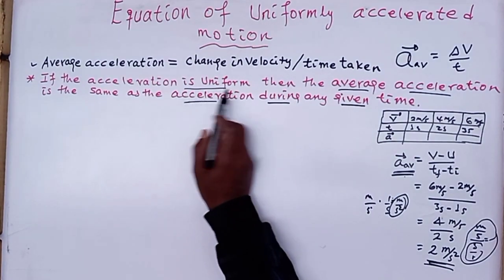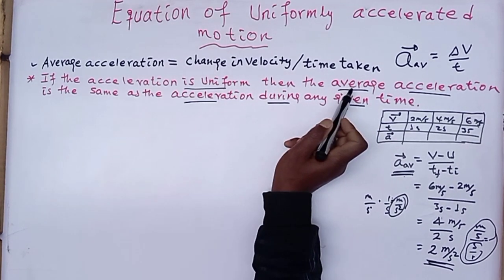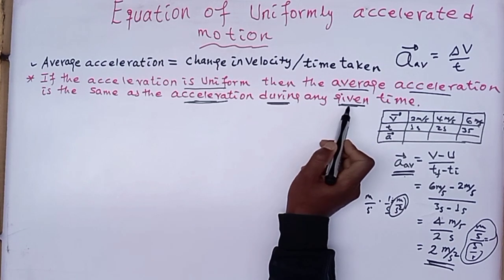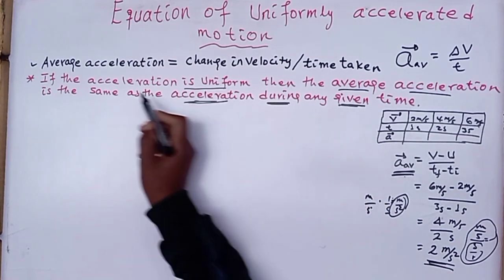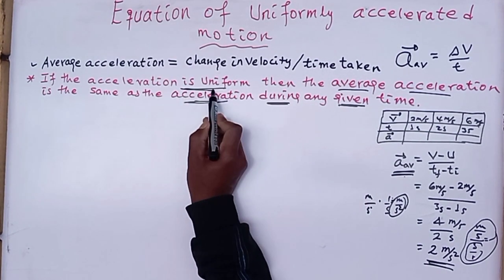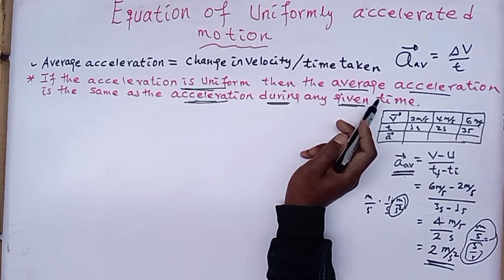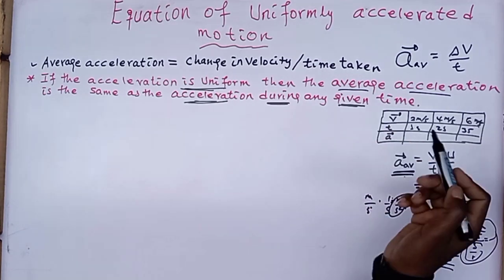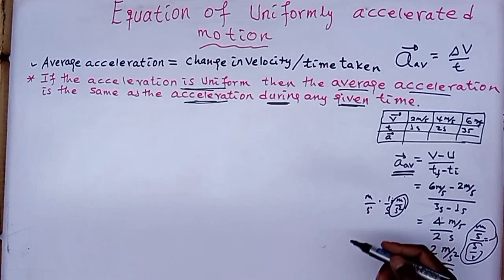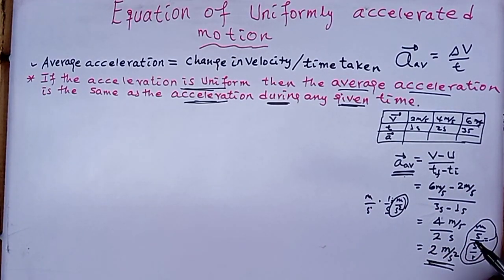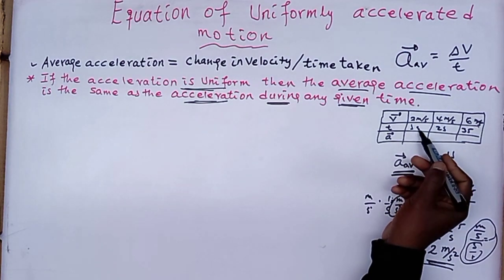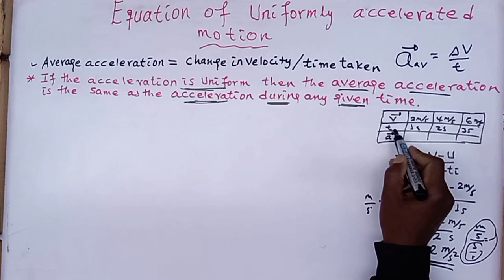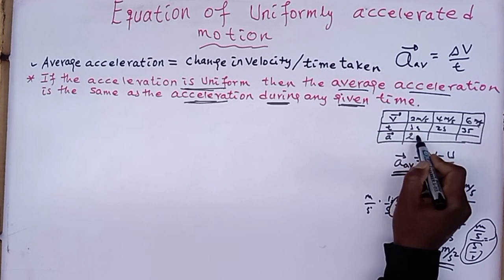So if the acceleration is uniform, then the average acceleration is the same as acceleration during any given time. In the case of uniform acceleration, the average acceleration equals the acceleration during any given time. For example, at two seconds the velocity is 5 meters per second.